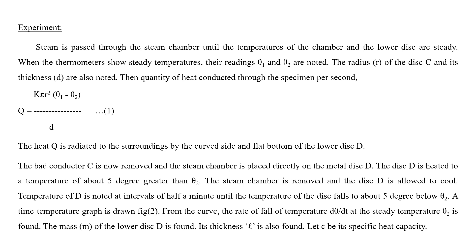Here d is the thickness of the layer. The heat Q is radiated to the surroundings from the curved side and flat bottom of the lower disc D. The bad conductor C is then removed, so steam is in direct contact with the lowest disc D. The disc D is heated to 5 degrees above theta-2.